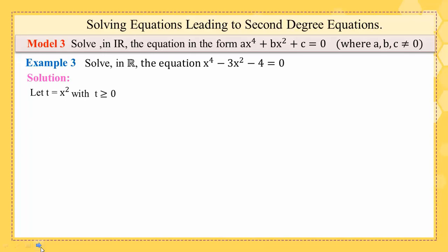Let t = x^2, with t must be greater than or equal to 0. If we square both sides here, t squared and here x squared squared, we get t^2 = x^4.